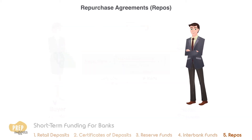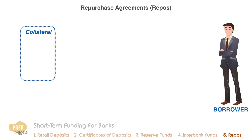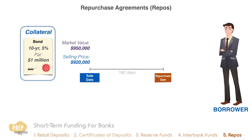Let's look at an example. A firm named Borrower enters into a repo agreement to sell a 5%, 10-year bond with a par value of $1,000,000. The bond has a current market value of $950,000. The bond is to be sold at $920,000 and repurchased 180 days later for $932,000.